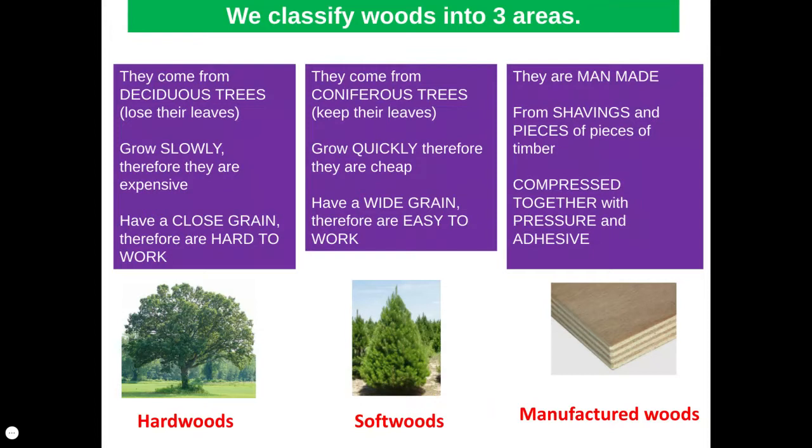The first thing we need to look at when we look at timbers are being able to classify them into their three separate areas. The first one we'll look at are hardwoods. Hardwoods come from deciduous trees. Deciduous trees are those trees that lose their leaves in the winter.